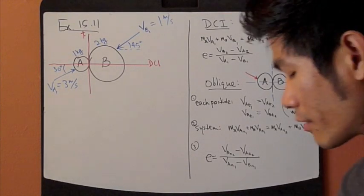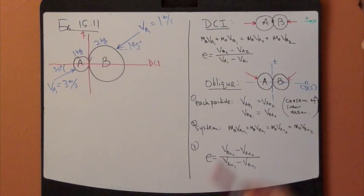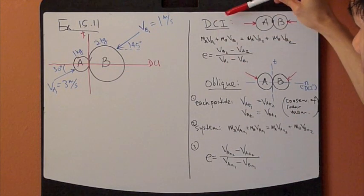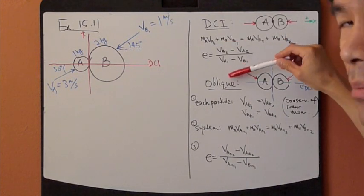All right, let's go over a summary for impact type math. There are two categories: direct central impact and oblique impact.